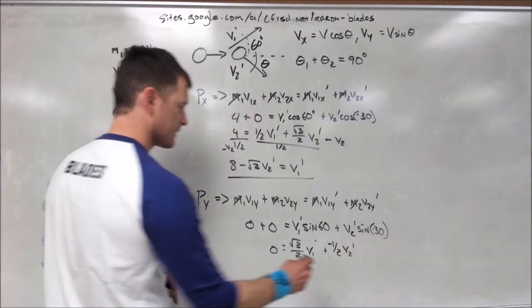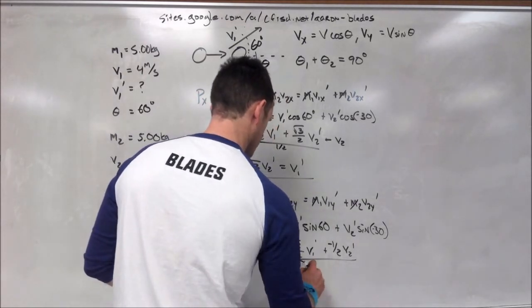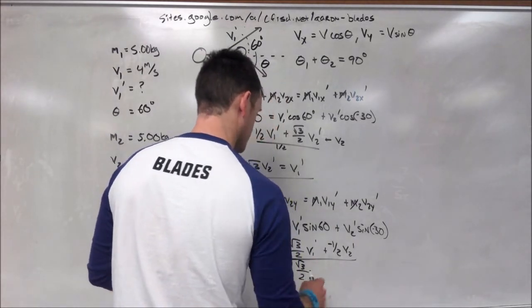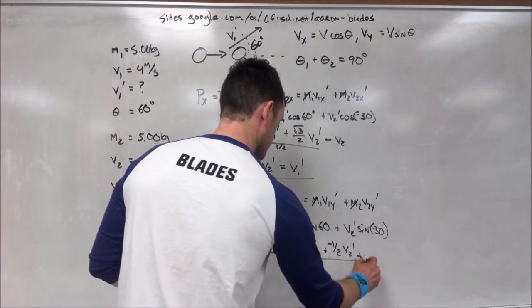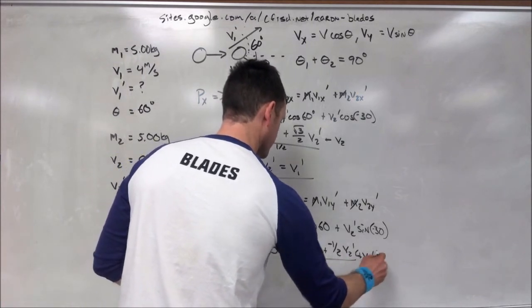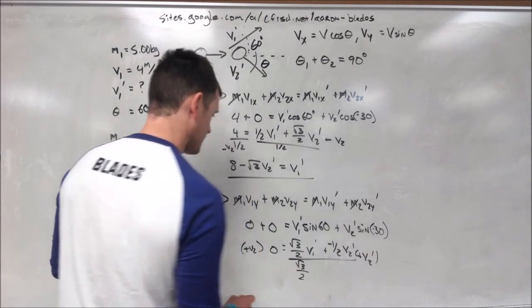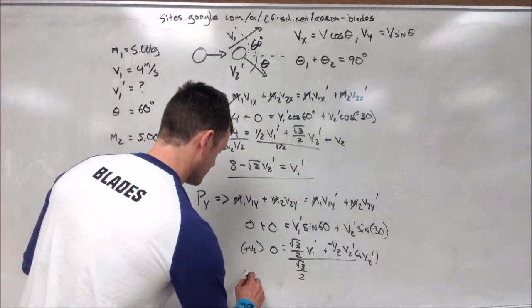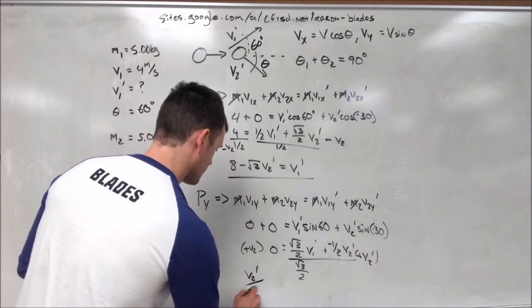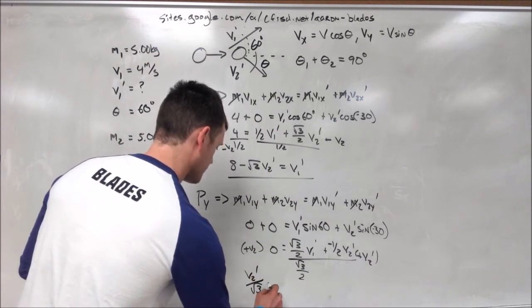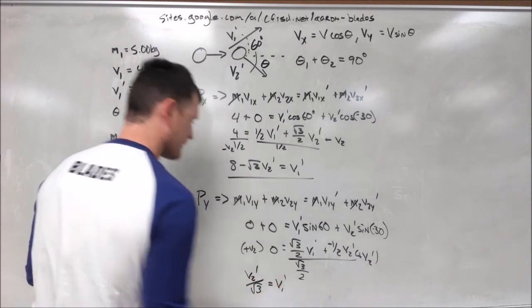And again, we solve for v1 prime, but this time by dividing by square root of 3 divided by 2, and then subtracting the v2 prime term from both sides. This leaves us with v2 prime divided by square root of 3 equals v1 prime.